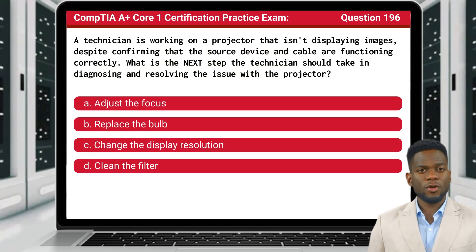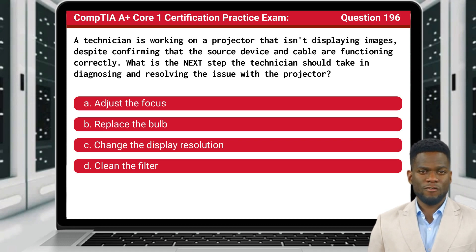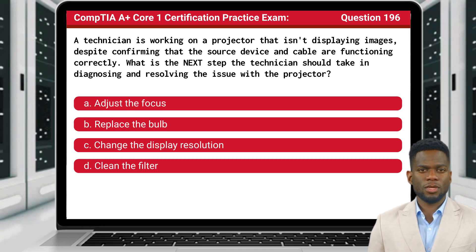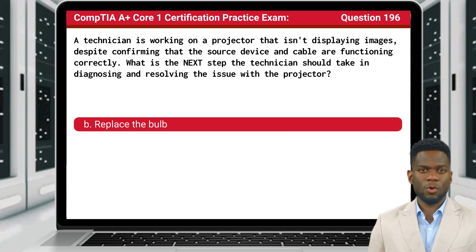Question 196. A technician is working on a projector that isn't displaying images, despite confirming that the source device and cable are functioning correctly. What is the next step the technician should take in diagnosing and resolving the issue with the projector? The answer is B. Replace the bulb.